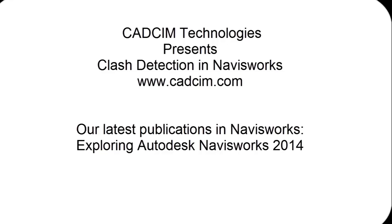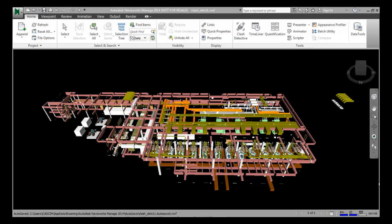Hello everybody and welcome to yet another exciting session of building information modeling brought to you by Katsom Technologies. In today's broadcast we are going to discuss one of the most interesting topics in BIM — clash detection. Clash detection is basically the tool by which we detect clashes between different elements, like a structural element beam and a mechanical element pipe, or between beam and beam, and between beam and multiple pipe sections in a BIM model.